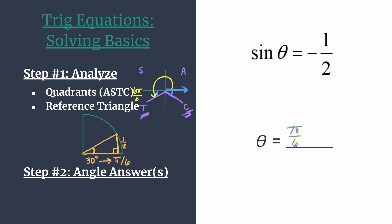Now let's determine the angle in quadrant four. We're rotating almost all the way around — all the way around would be 2 pi, or 12 pi over 6 with a common denominator. So 1 pi over 6 less than that — our reference angle — must be 11 pi over 6. Our two answers to this equation where sine theta equals negative one-half are 7 pi over 6 and 11 pi over 6, and those are our answers on the unit circle from 0 to 2 pi.